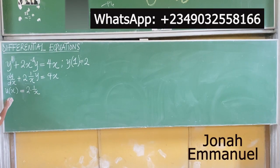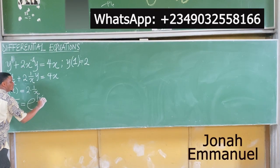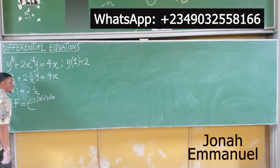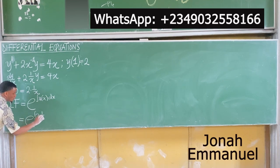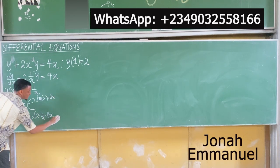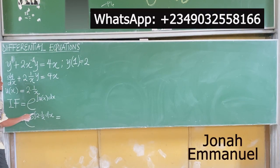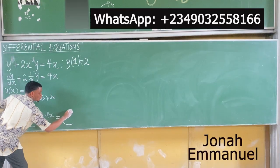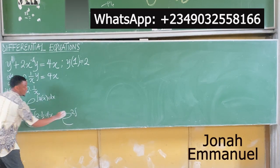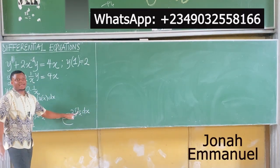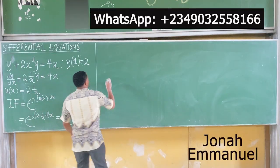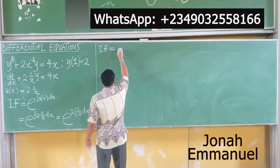From here I can get the integrating factor. The integrating factor is equal to e raised to the integral of u(x) dx. Substituting values, this is e raised to the integral of 2 times 1/x dx. Moving the constant outside the integral sign, that becomes e raised to 2 times the integral of 1/x dx. Integrating 1/x gives ln x.